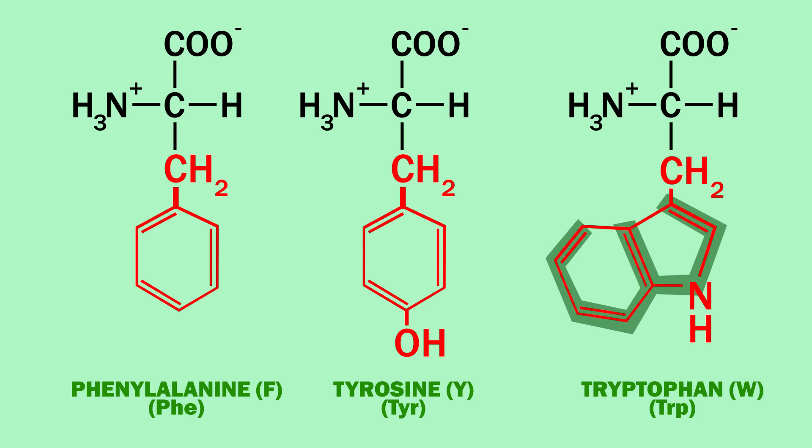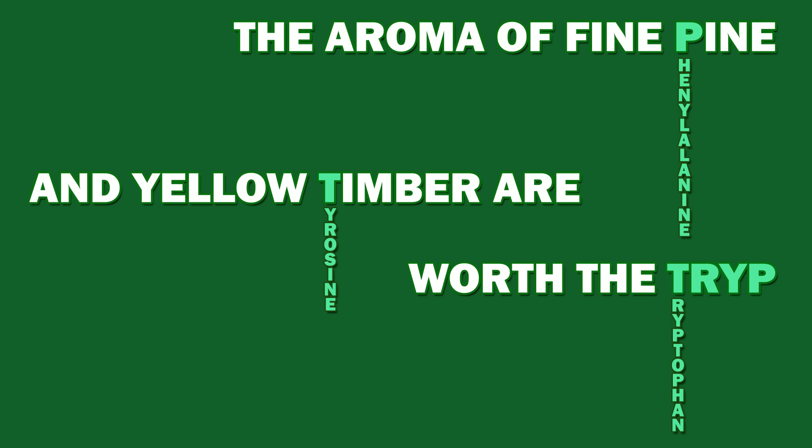Unlike the aliphatic amino acids, where the single-letter abbreviations are all the first letter of the amino acid names, the aromatic amino acids have unusual single-letter abbreviations. Pine trees (phenylalanine) have fine needles — F. Timber (tyrosine) is yellow — Y. And the trip is worth it — W.